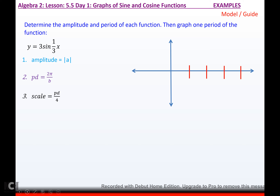Now one where the period is different. The amplitude is the absolute value of 3, so amplitude is 3 — going as high as 3 and as low as negative 3. The period is 2π over b, which is 2π over one-third. Keep, change, flip: that's 2π times 3, which is 6π. The scale is 6π divided by 4, which reduces to 3π/2. So my first mark is 3π/2.